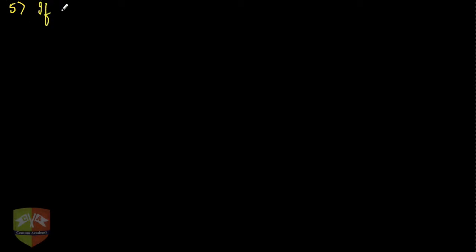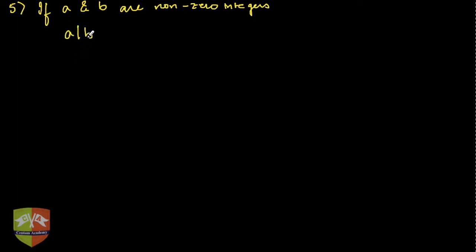Let's talk about property number five. Property number five says that if a and b are non-zero integers, and a divides b and b also divides a, then this can happen only when a is equal to plus or minus b.